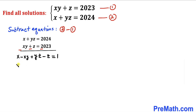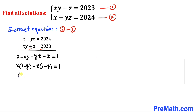Let's factor out x to get x times (1 minus y), and factor out negative z from the last two terms to get negative z times (1 minus y). So we have (1 minus y)(x minus z) equals 1.